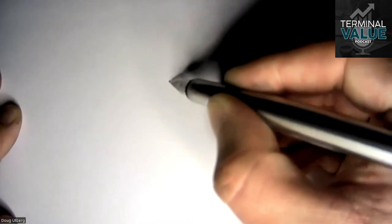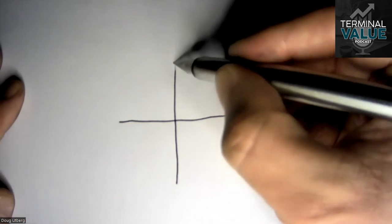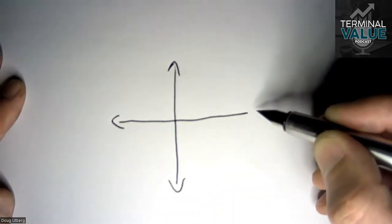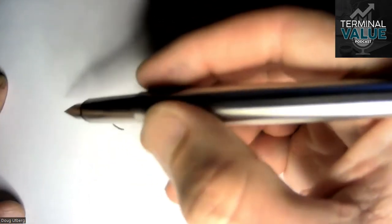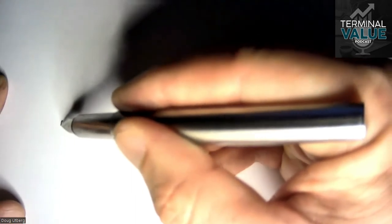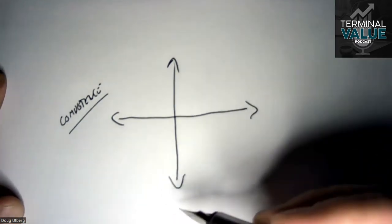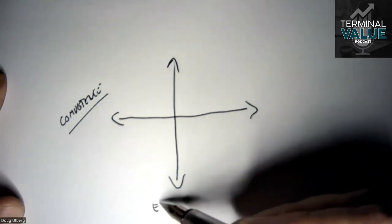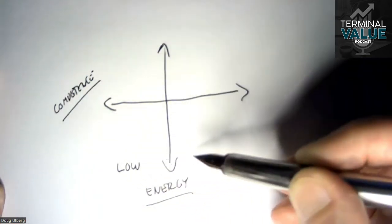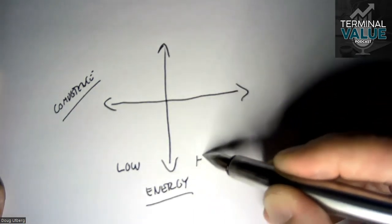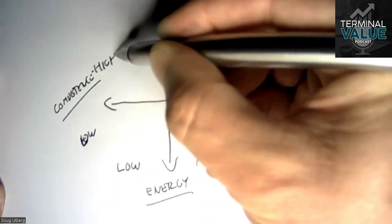As usual, I'm going to draw a two-by-two matrix with a horizontal and a vertical axis. When we're talking about task strategies, on our vertical axis we're going to look at our competence for a task or set of skills, and on the horizontal axis we're going to look at our energy. We have low and high energy, and low and high competence.